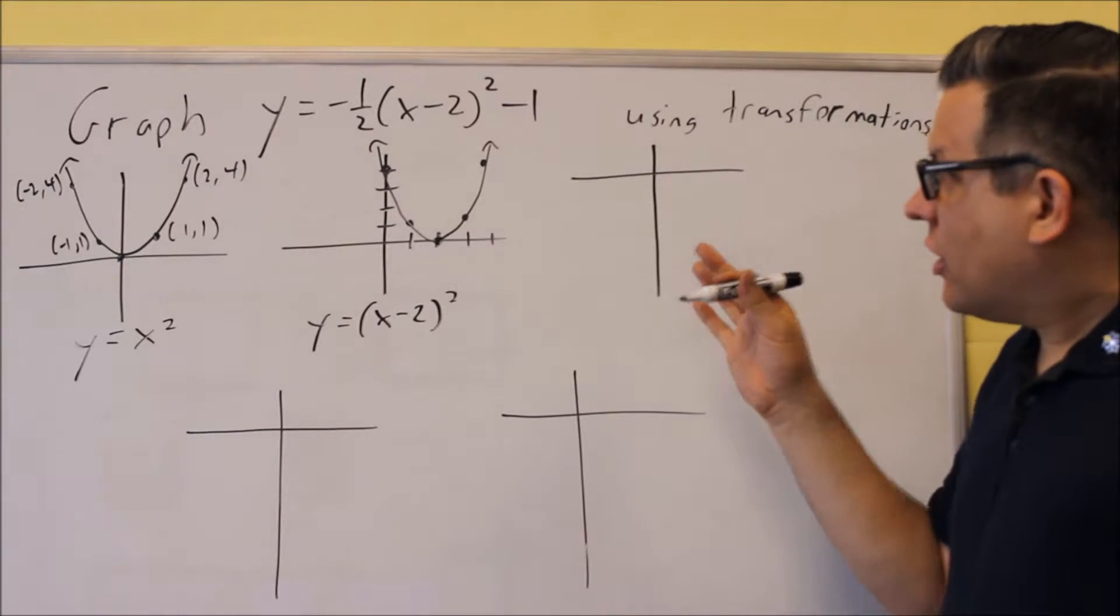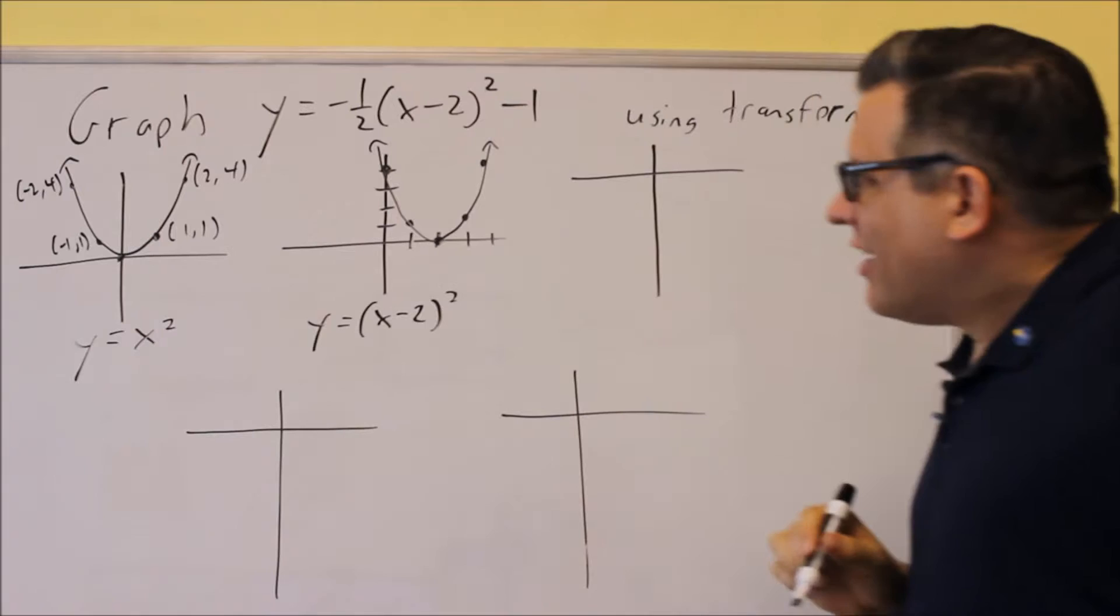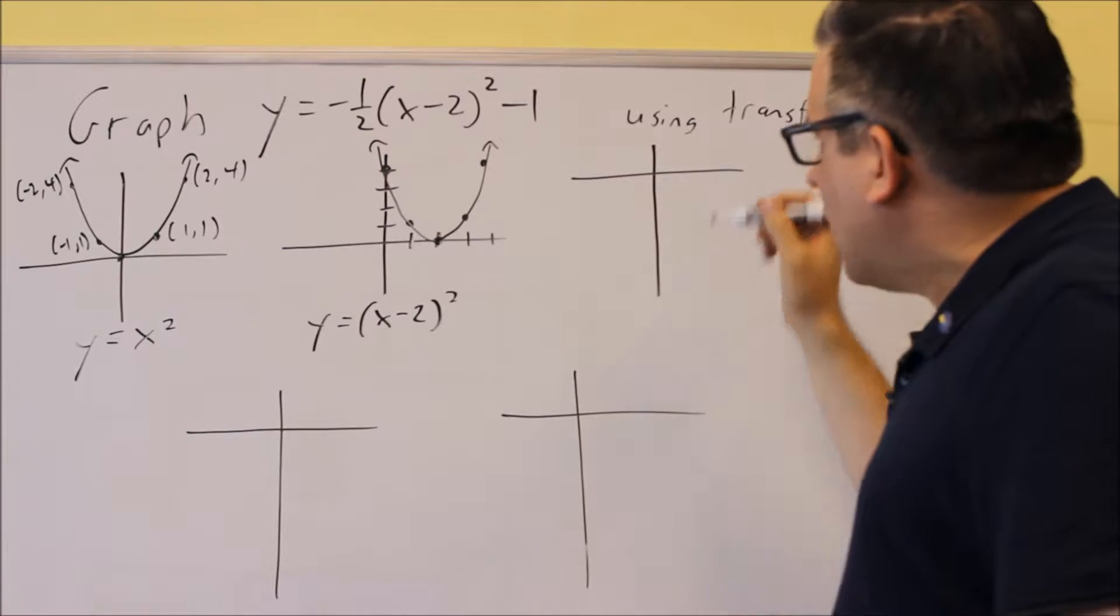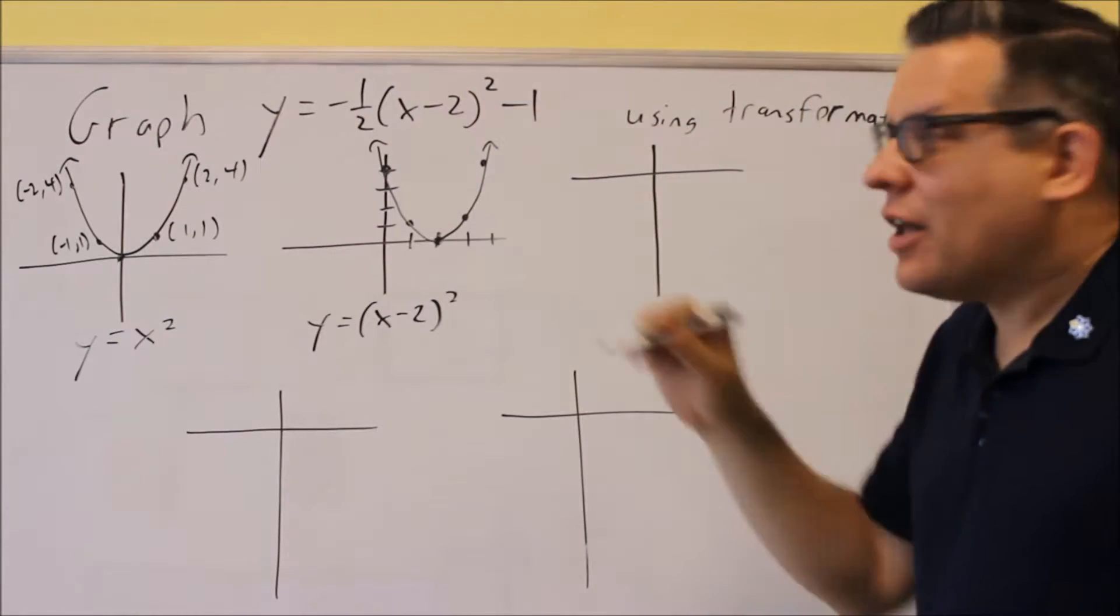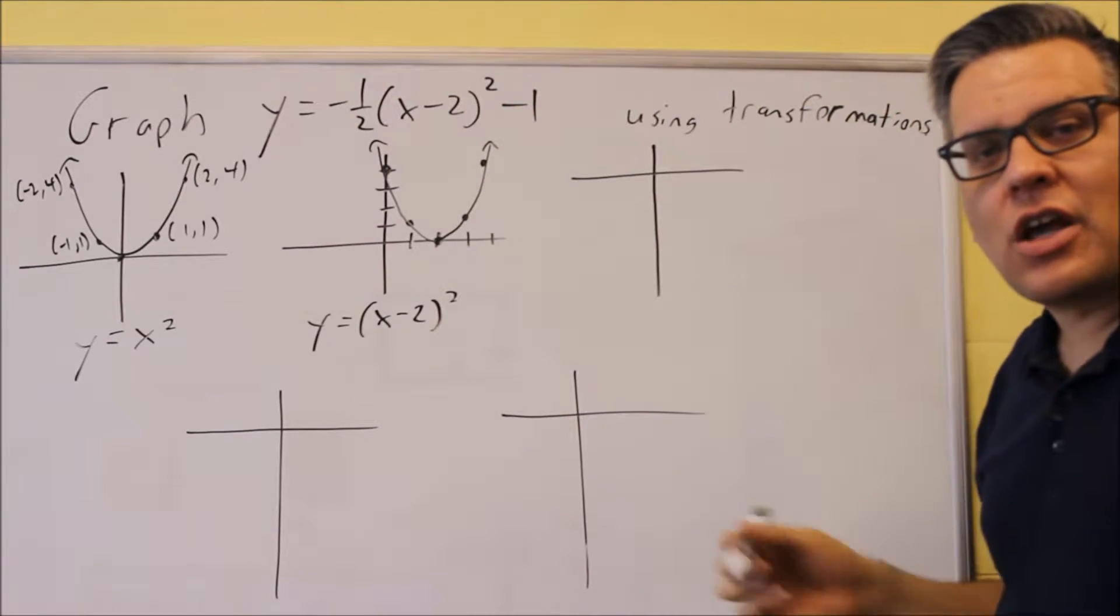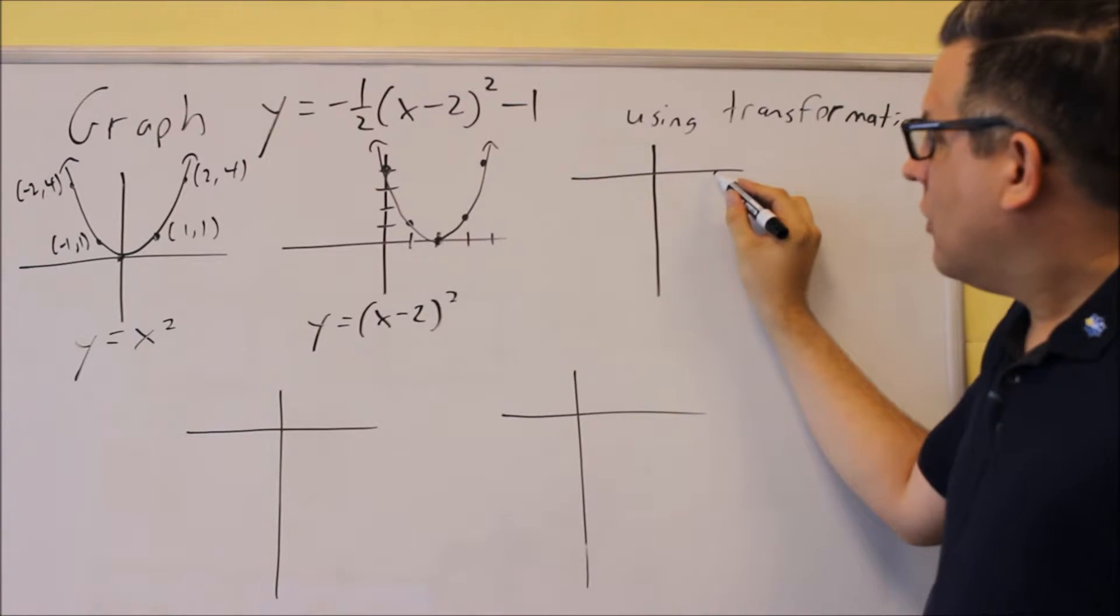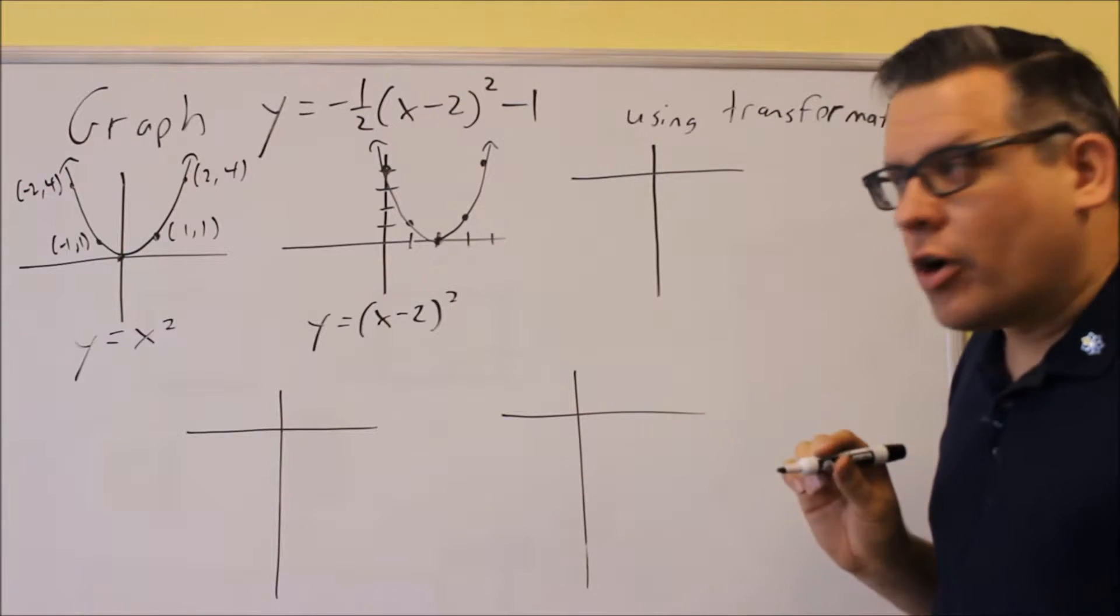Now, on the previous problems I've done, I've done the minus 1 and then done the negative. Instead, I'm actually going to apply the negative first. So I want to apply the negative, and then I'm going to apply the compression on the outside, and then finally I'll do negative 1. It's going to make that compression easier. If I have something that's based off of touching one of the axes, it's actually easier to do the compression that way.